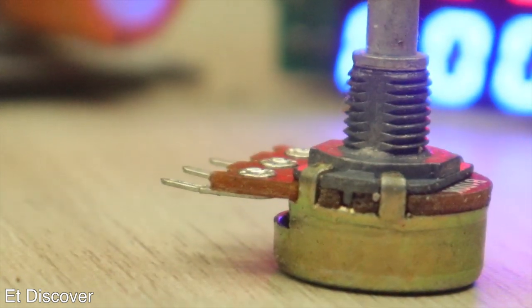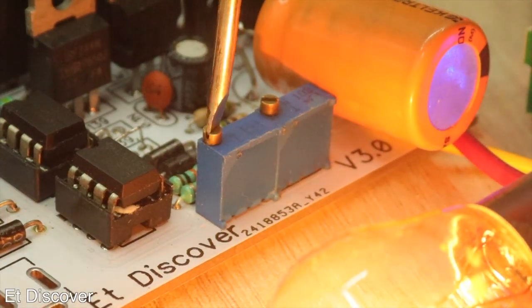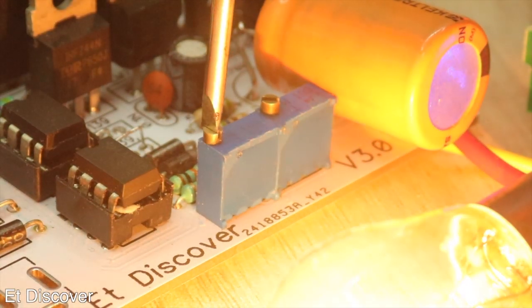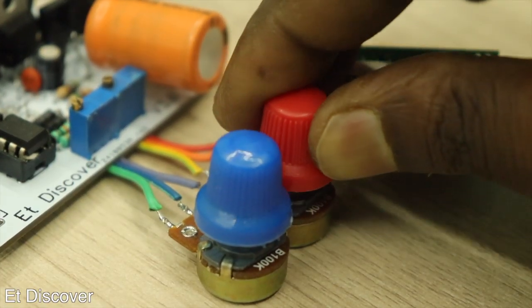I am using a 1K potentiometer for voltage regulator and 100K potentiometer for current regulator. As my request to everyone, you can use a 10 turn potentiometer for voltage regulator. As a result, you can select very small millivolts for your sensitive work. I didn't find it anywhere, so here I am using a 1 turn potentiometer.